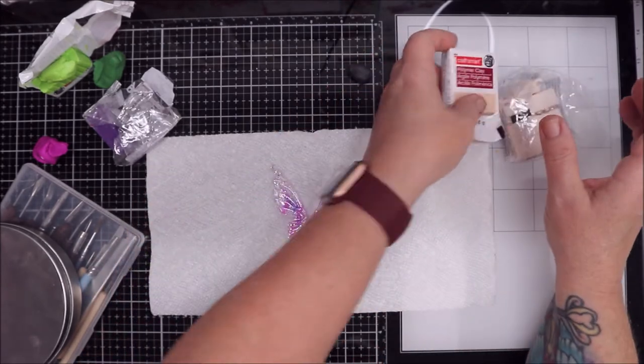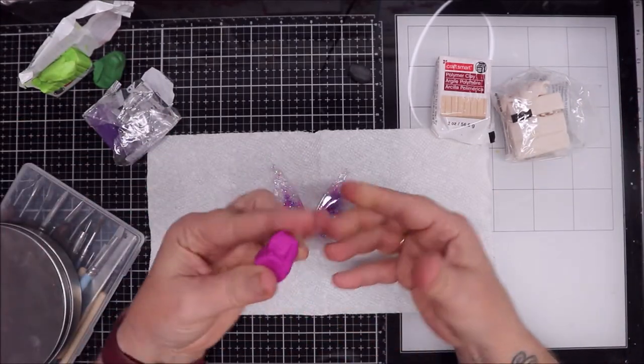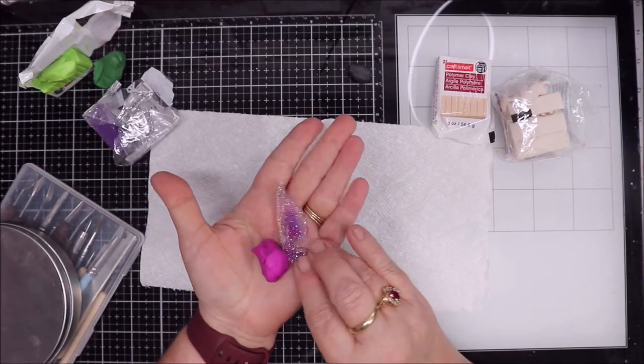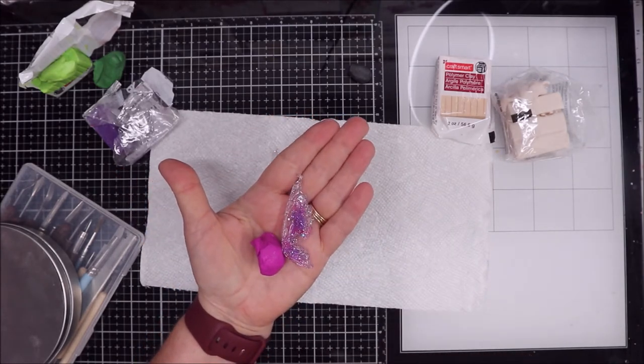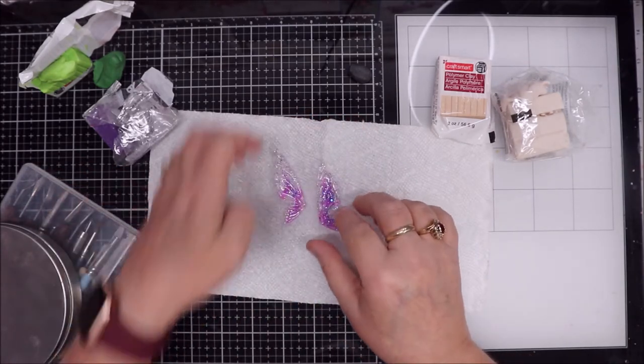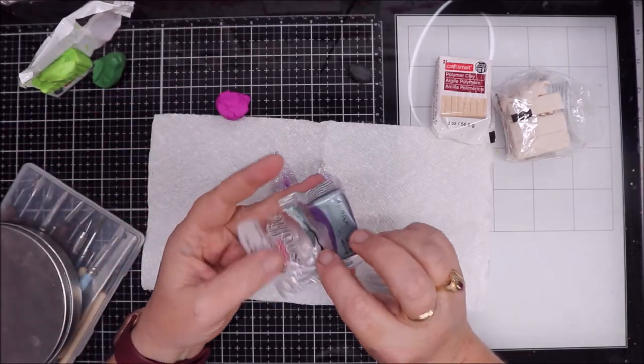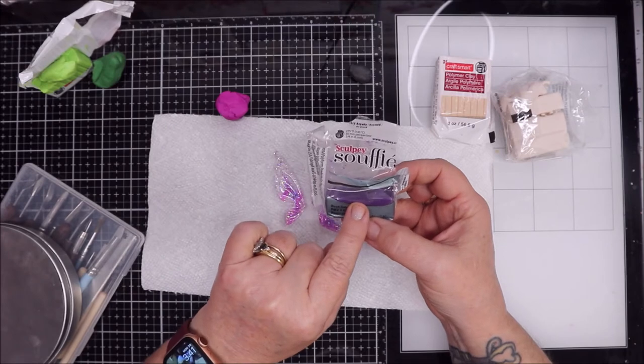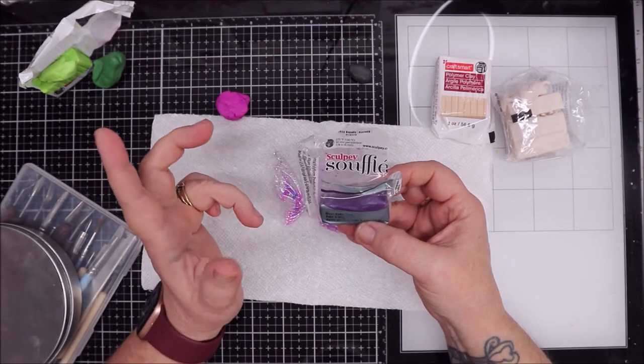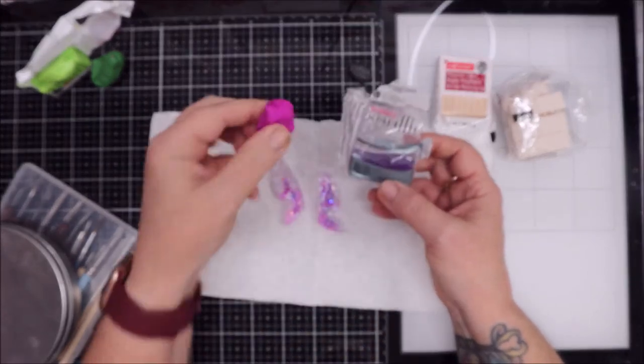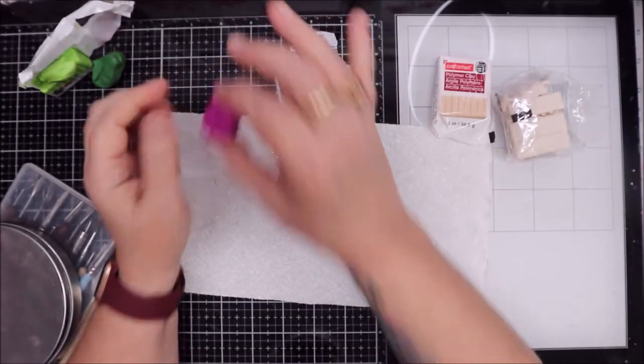I've also got this little bit of magenta clay that I thought would go really well with the wings, and I also have some purple here. This is Souffle in Royalty. I'm not sure what clay this came from because it's pretty old but it has a little bit of sparkle to it.